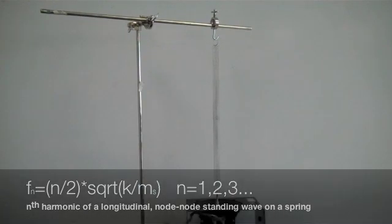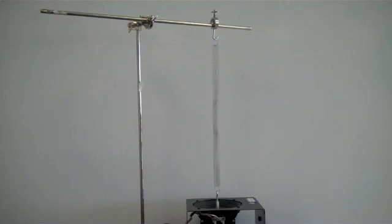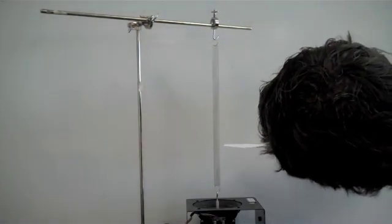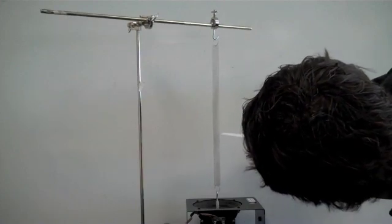Then we can also get node-anti-node patterns. For example, if I go to approximately 7.5 hertz. Now, what we're going to see is a node right around here somewhere. It'll take a little bit to stabilize.